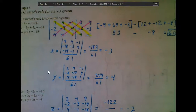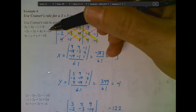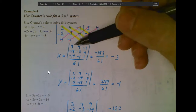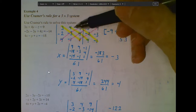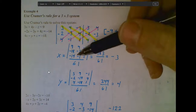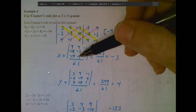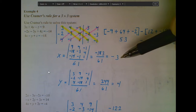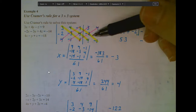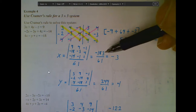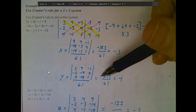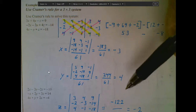Now to solve for X, I take my three constants — 9, negative 14, and negative 18 — and put them into the X column, leaving the other two columns alone. I then find the determinant of this new matrix using the same diagonal process, which gives me negative 183. Dividing negative 183 by 61 gives me my solution for X.